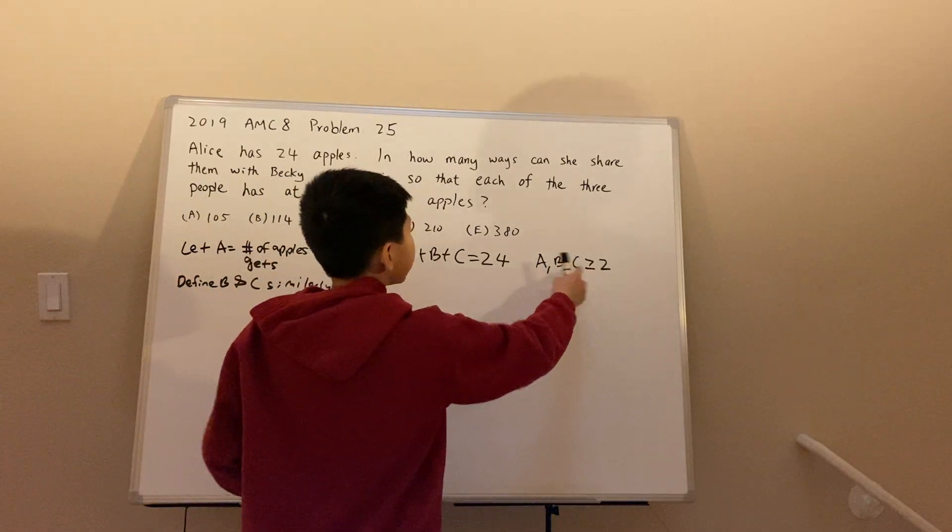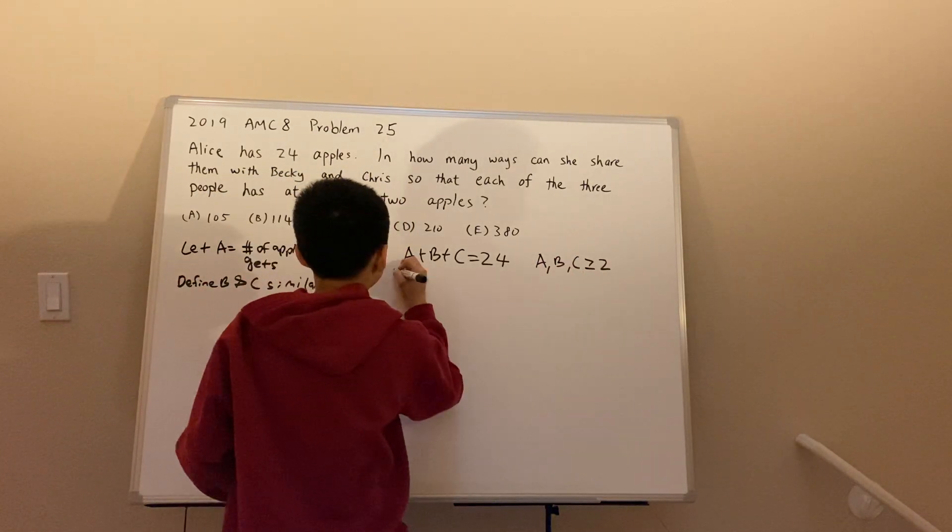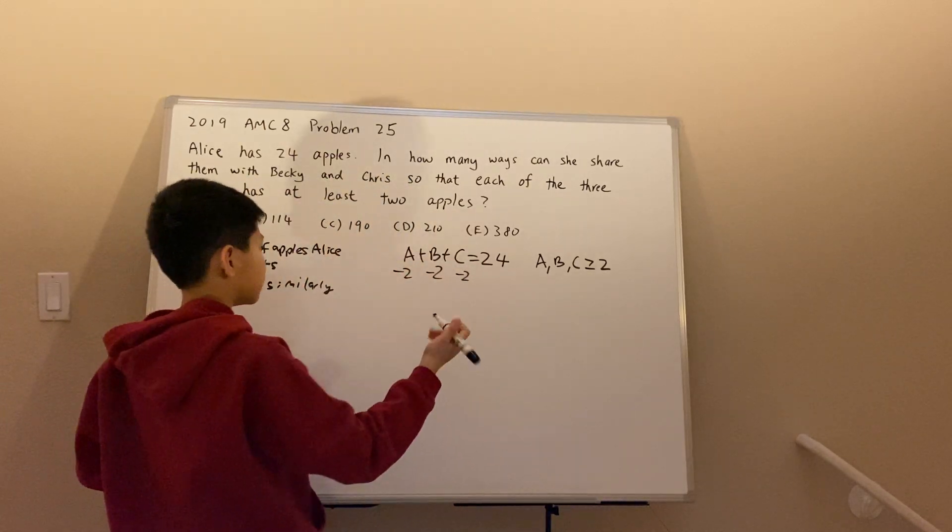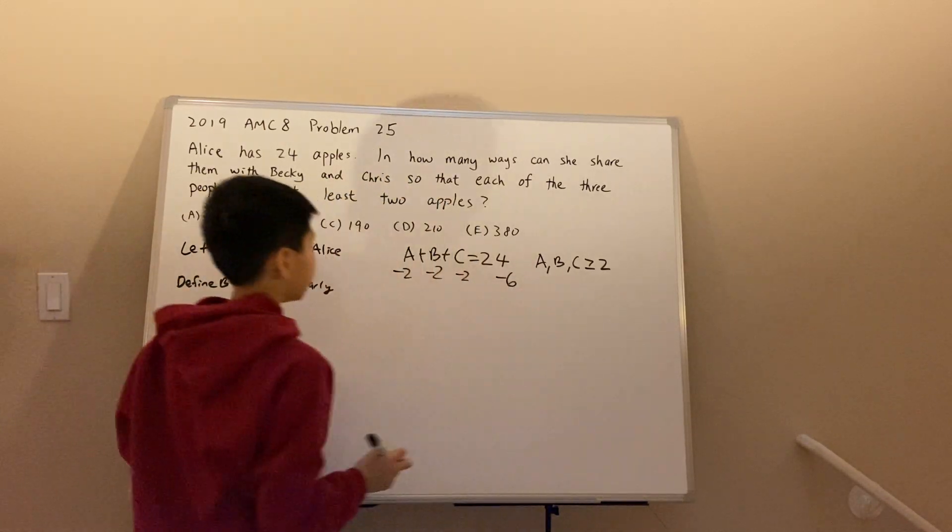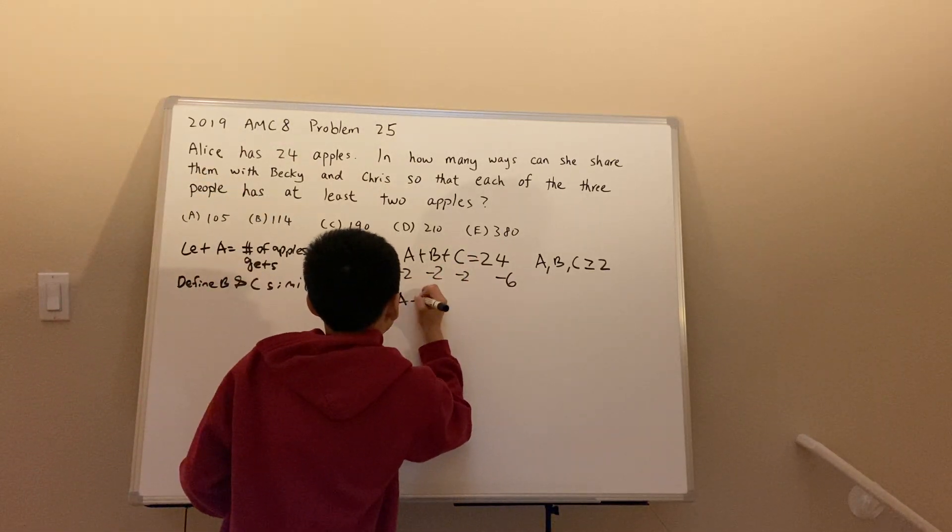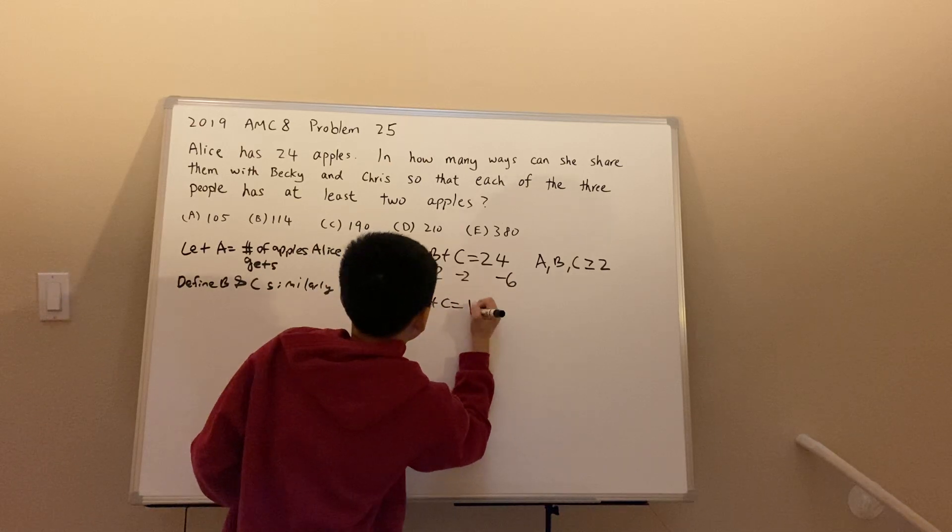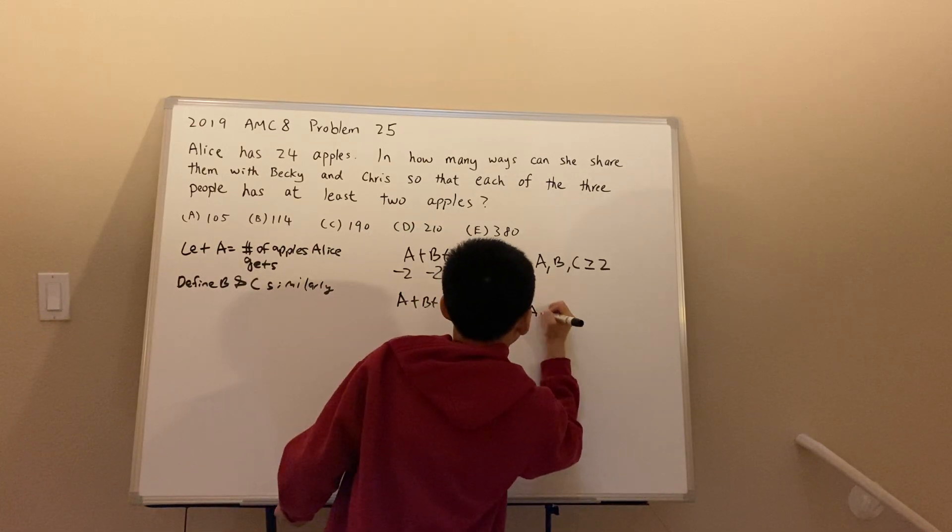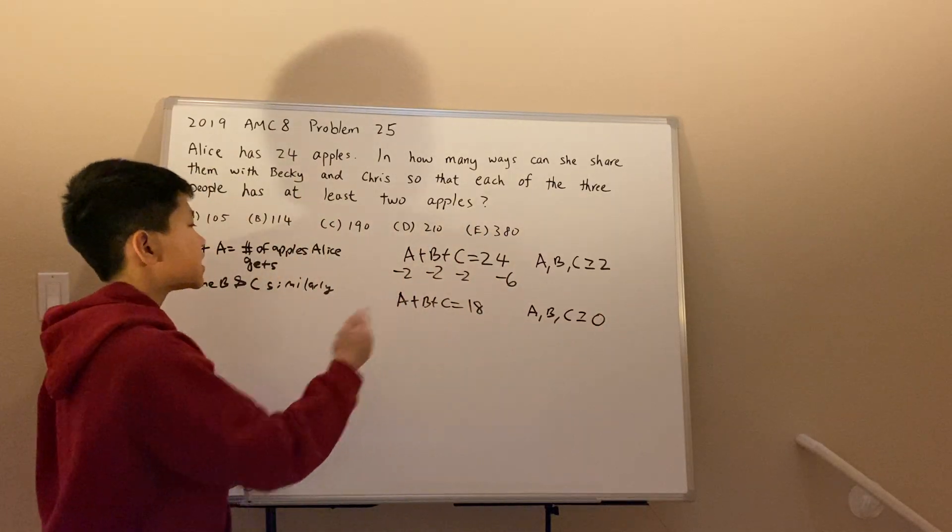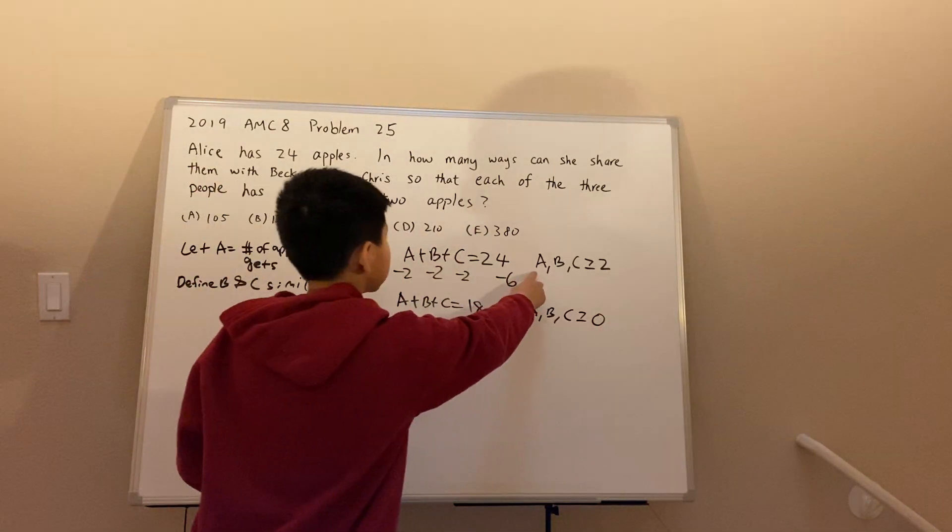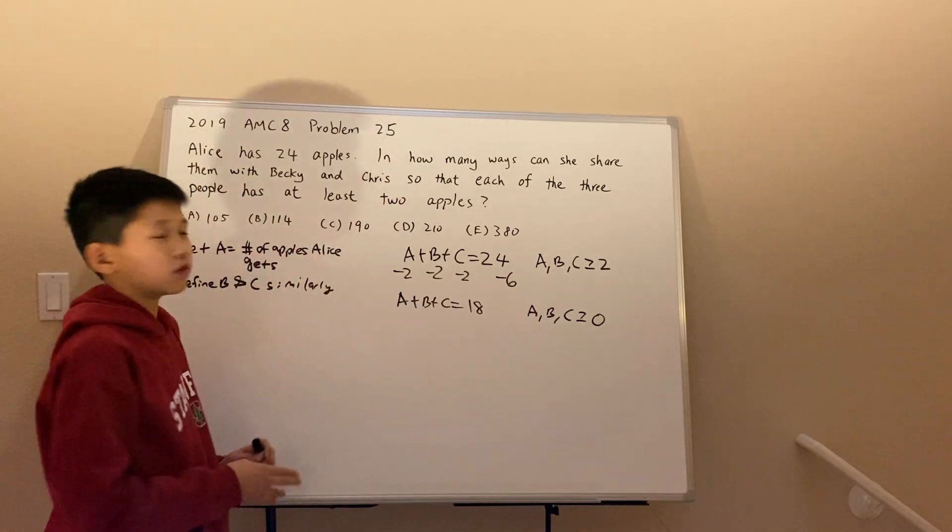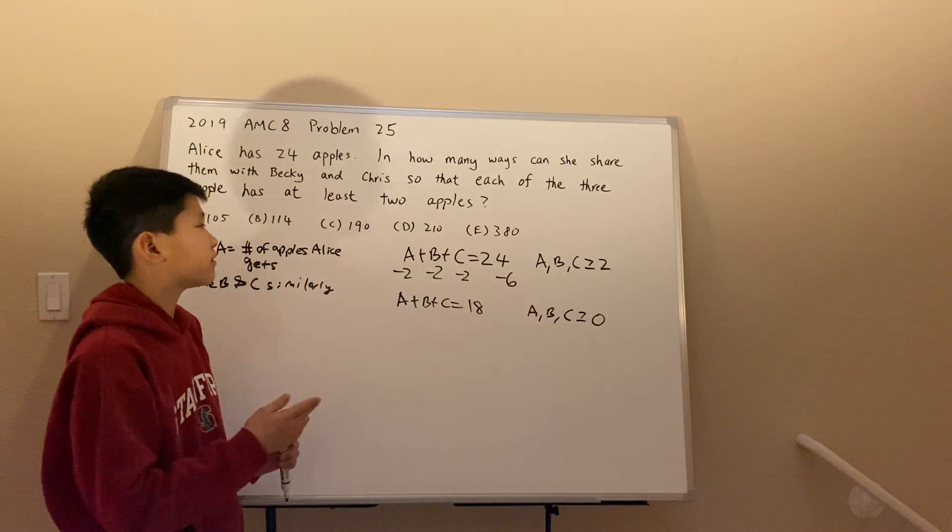So to get rid of this 2, we can subtract 2 from each variable. In the total we subtract 6. We get 24 minus 6. This results in A plus B plus C equals 18, and A, B, and C are greater than or equal to zero. Since we subtracted 2 from everywhere, A, B, and C are just greater than or equal to zero now. So we've gotten rid of that restriction.